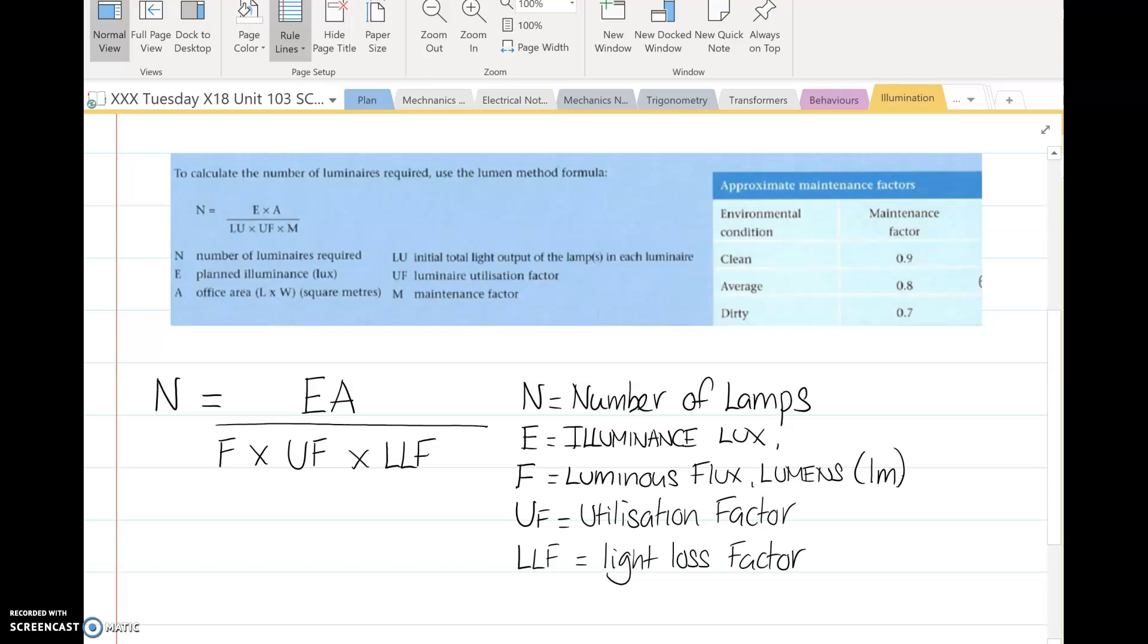So in this video we're going to explain how to calculate the number of lamps within a room area to provide an illuminance on the surface. Basically what we have in this formula is N, the number of lights, equals the illuminance times the floor area divided by the actual luminous flux of the lamps that you fit in, the utilisation factor, and the light loss factor.